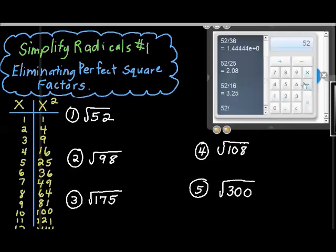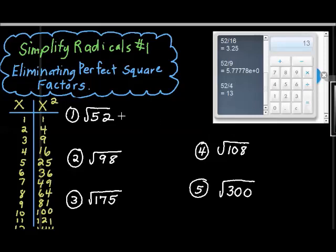How about 9, 52 divided by 9, nope, and last, let's do 52 divided by 4, ah, that works, I get a 13. What that tells me is that 52 divided by 4 equals 13, that means that the factors that I can use are 13 and 4.